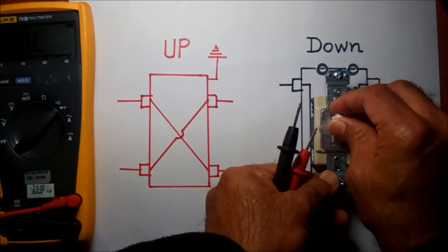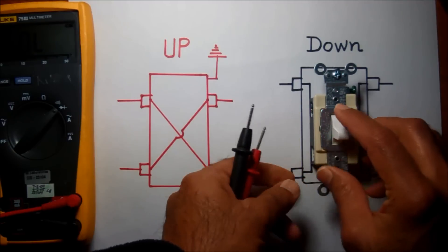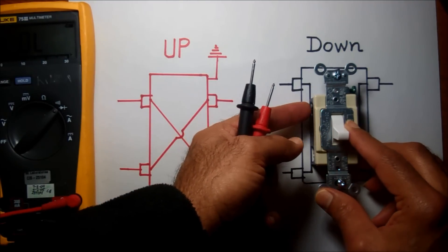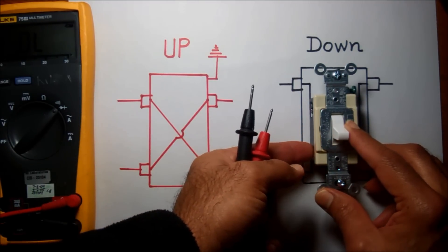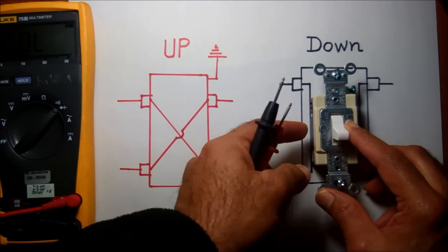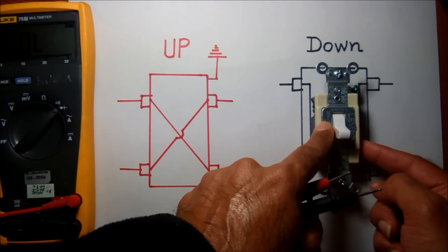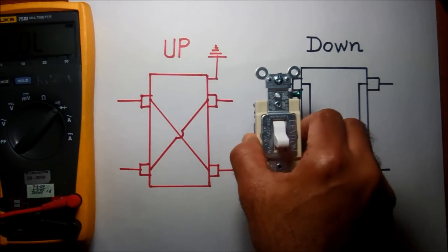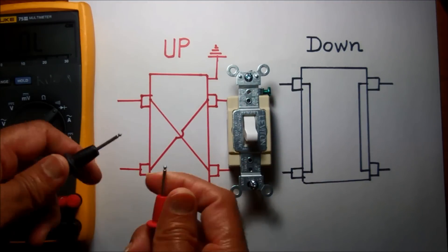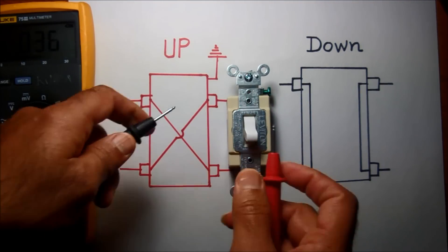When switching to the down position, both sides - from the top left and bottom left - make the connection. Also, the top right and bottom right make the connection. So we can verify this one here.